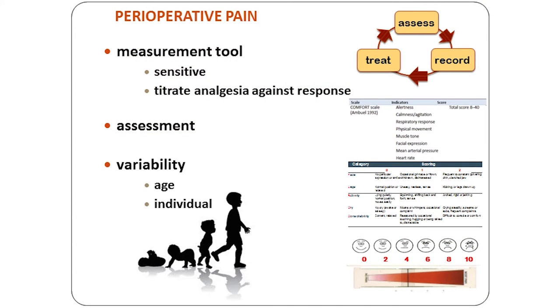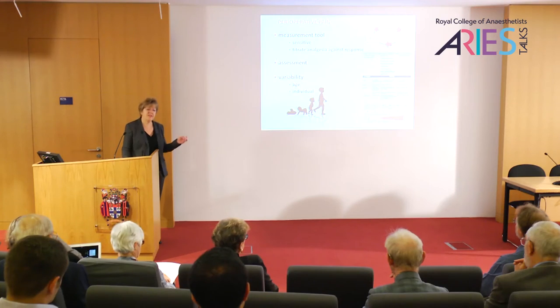In paediatric practice we may be dealing with a 600 gram pre-term neonate at the beginning of the list and a 130 kilo adolescent at the end. Across that age range there are going to be huge changes in the safety, efficacy, dose, and type of analgesia that we use, and also the appropriate level of monitoring.